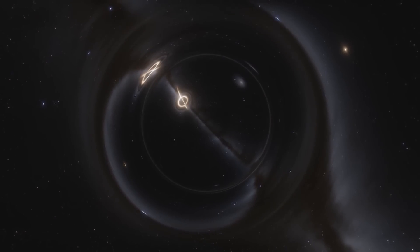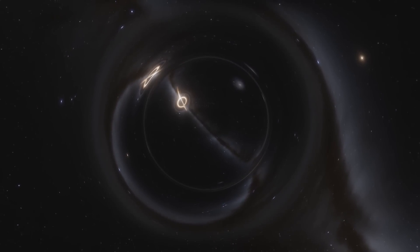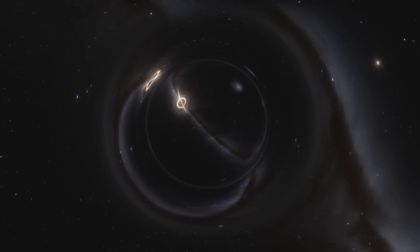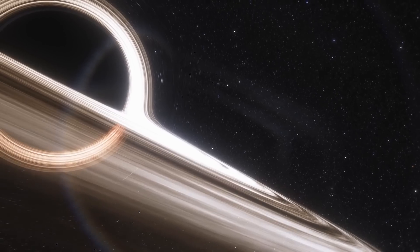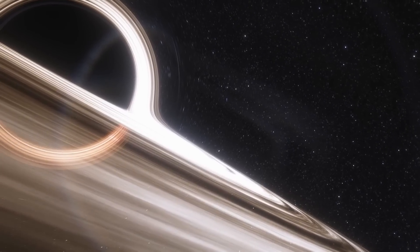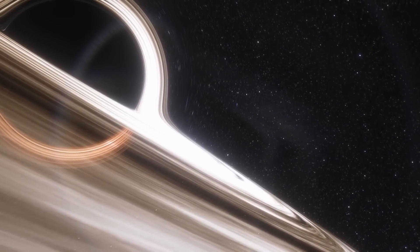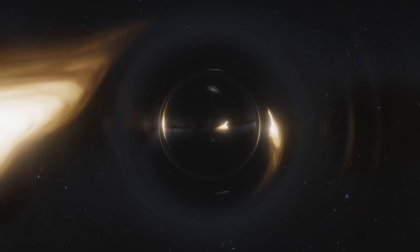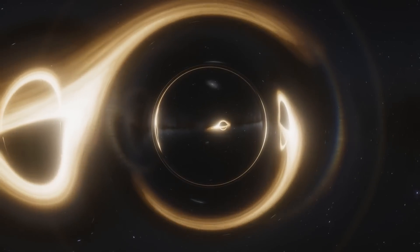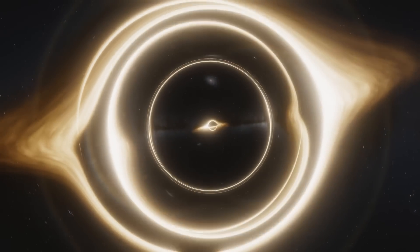There are supermassive black holes out there, at the beginning of time, that are millions to billions of times heavier than our sun. How could they become so massive so quickly in the earliest days of the universe? One theory is that they formed from smaller black holes that were constantly devouring matter and merging with other black holes.